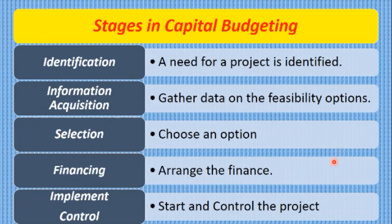We have the stages in capital budgeting. First, you must identify a need for a project — there must be some need for making the capital investment, otherwise there's no point in going into it. There must be a need for expansion or a need for modernization. Then you will gather data on the feasibility options. There should always be more than one option in order to make decisions — if you only have one option, there's no choice to be made.